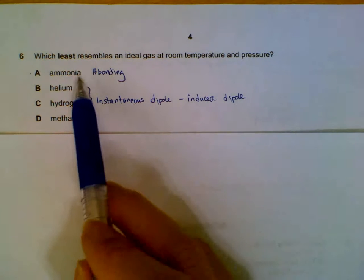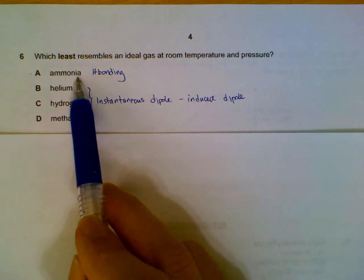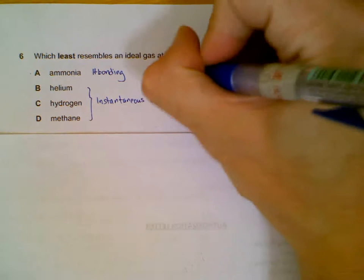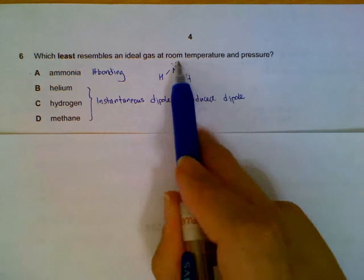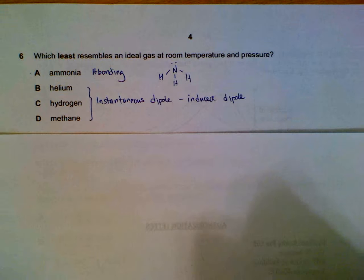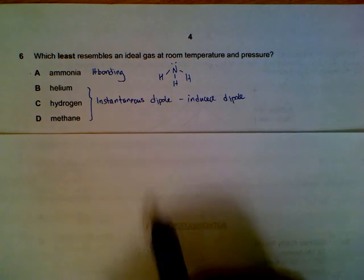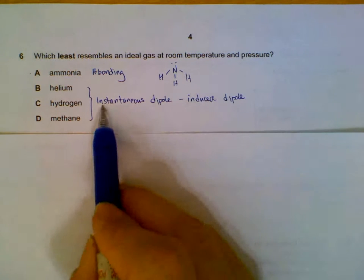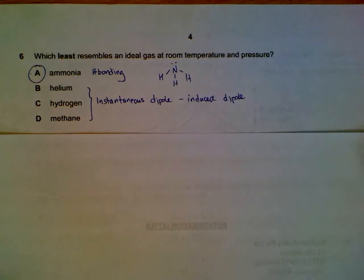Number six: which one least resembles ideal gas? You have to be clear about the intermolecular attraction. Ammonia will have hydrogen bonding because hydrogen is joined directly to nitrogen and there's a lone pair to complete the hydrogen bonding. The rest have instantaneous dipole induced dipole, which has negligible attraction compared to ammonia. Having significant attraction means you deviate the most from ideal gas.